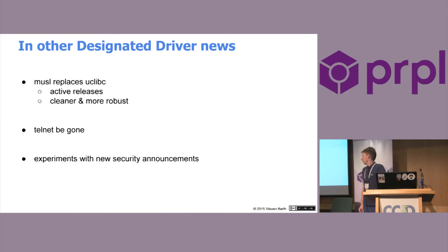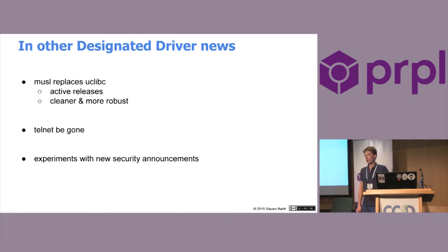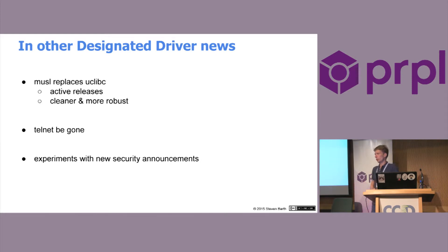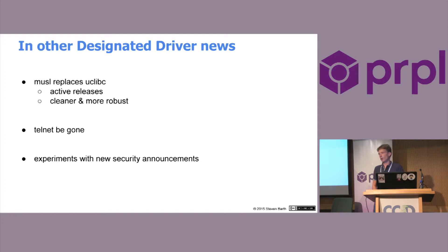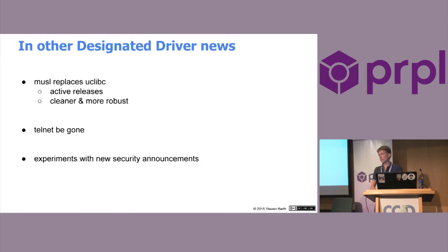Telnet be gone. If you flash a default OpenWRT build or do a factory reset, there was a telnet interface accessible until you set a password, which was then automatically disabled. We got rid of that now. You can use SSH from the start in trunk. We don't use a default password — you can still utilize SSH without a password until you actually set one for the root account.